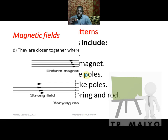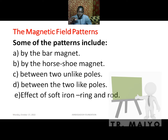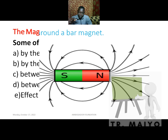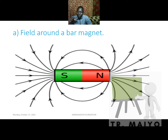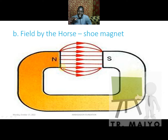Magnetic field patterns we are going to look at include: the bar magnet, the horseshoe magnet, between two unlike poles, between two like poles, and the effect of a soft iron ring and rod. For a field around a bar magnet, you can see the magnetic field lines moving from north pole to south pole. Use at least three magnetic field lines when drawing — don't just draw one.